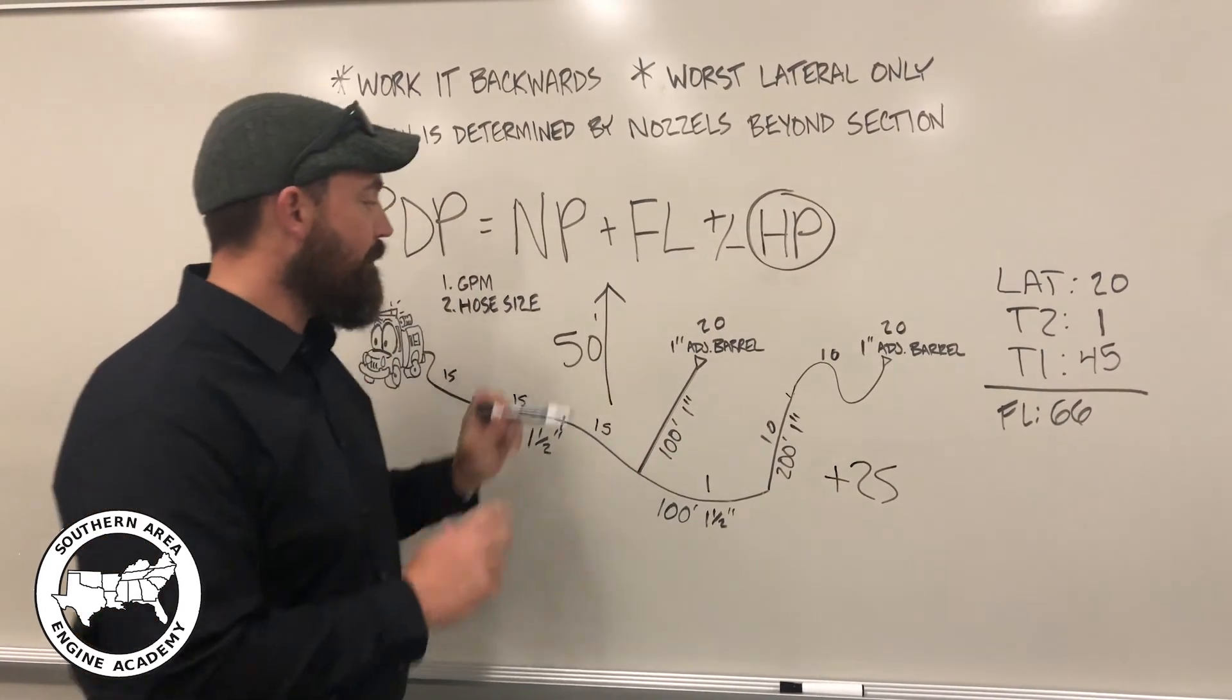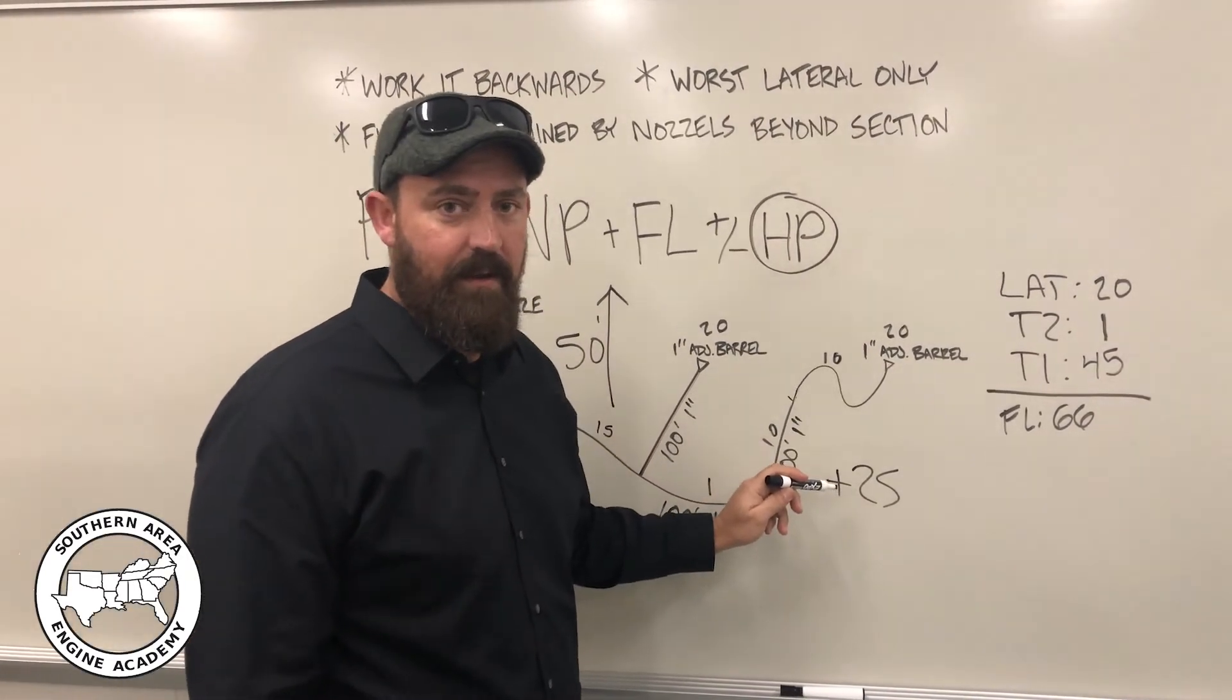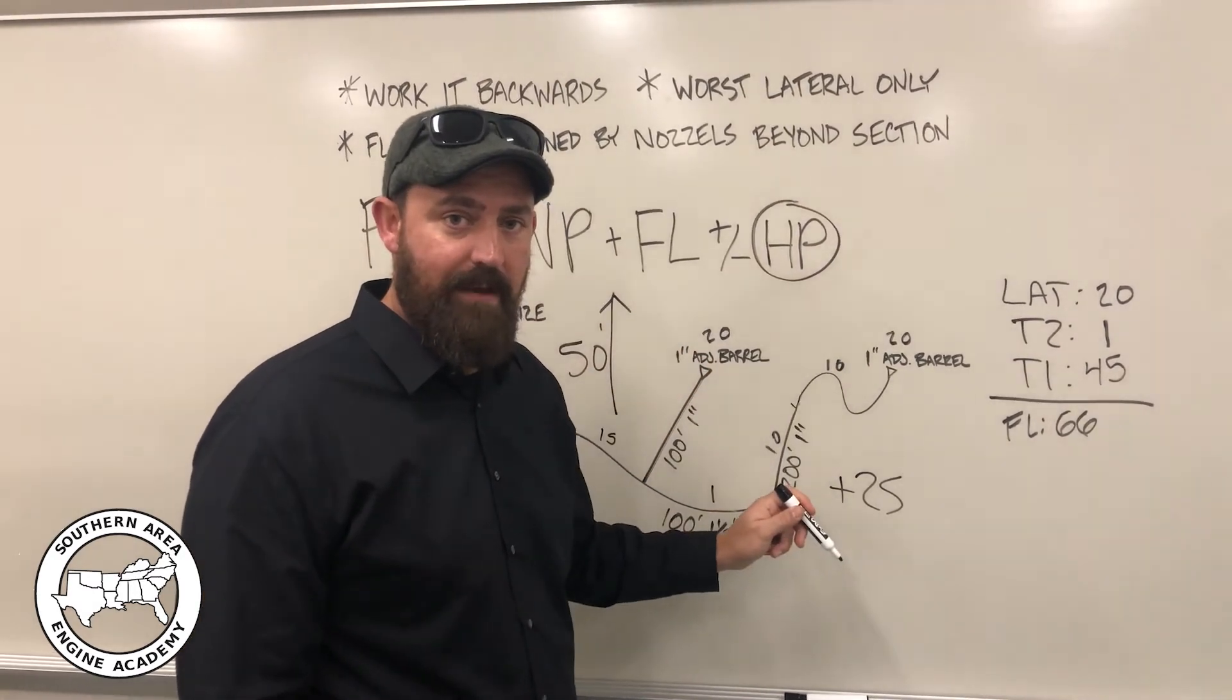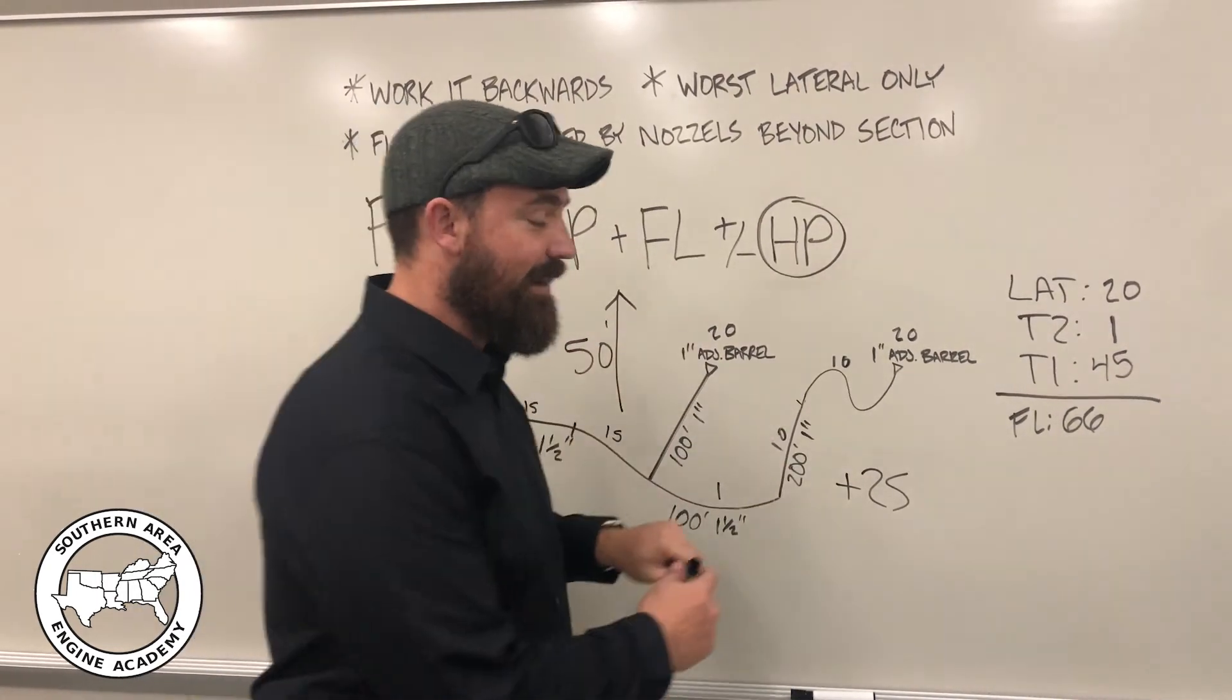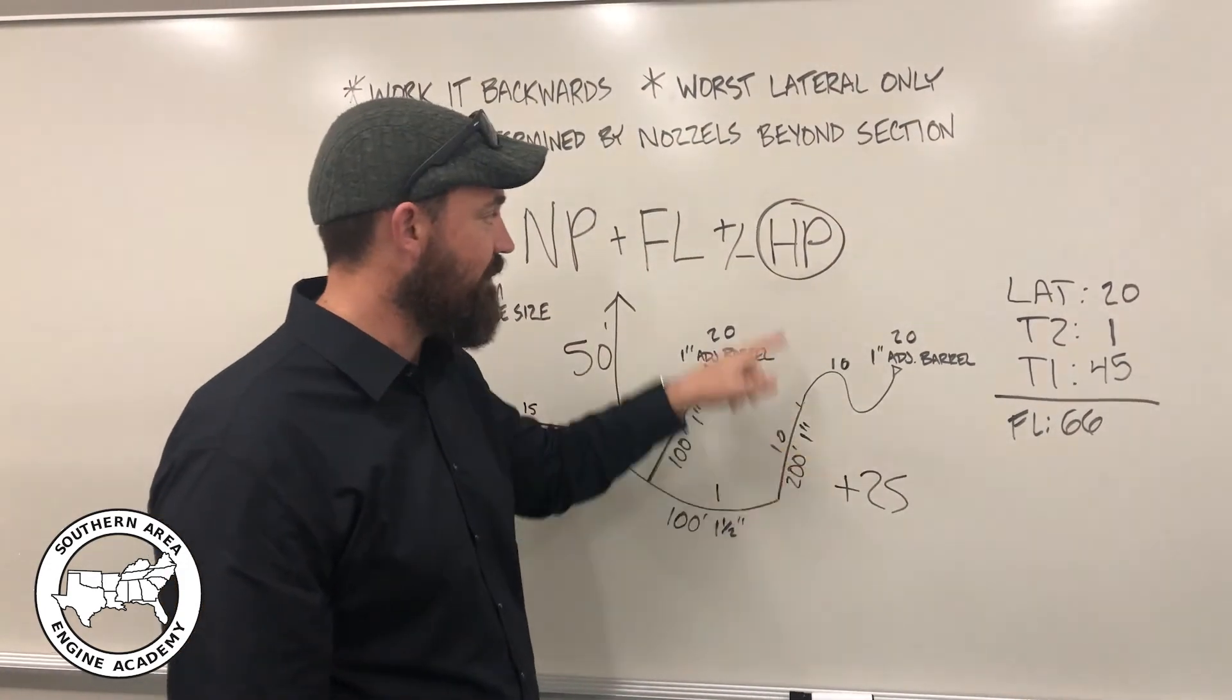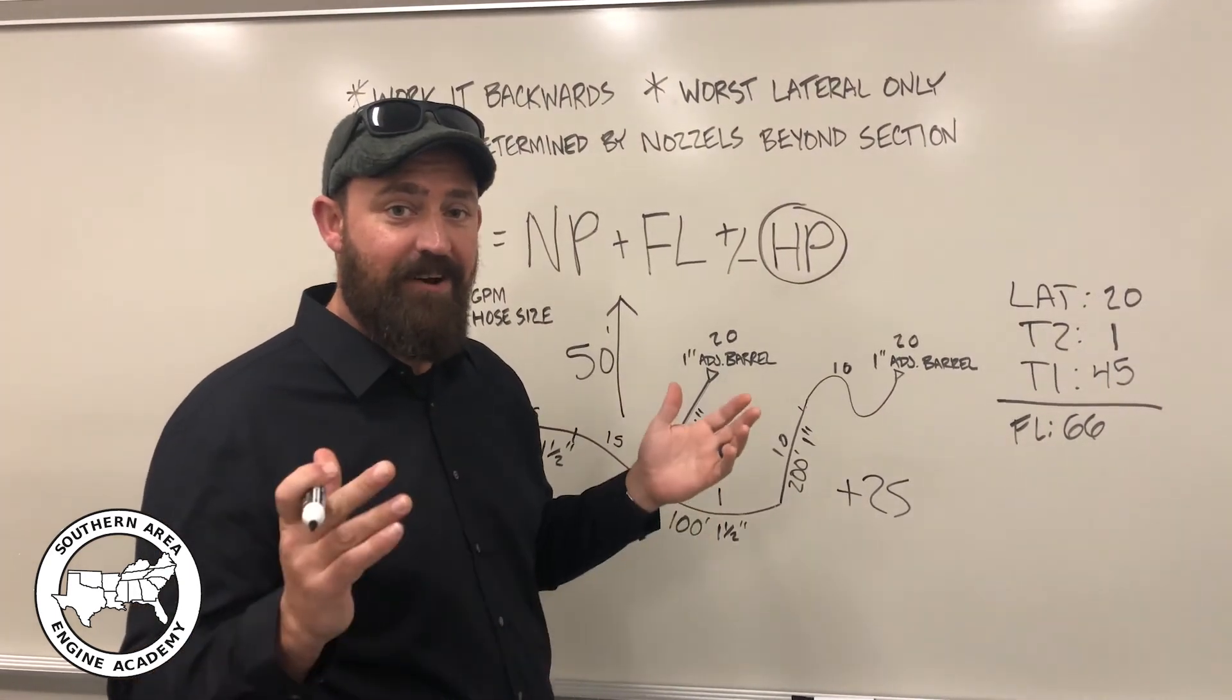Now, if the opposite were true, if this were going 50 feet downhill, we would have to subtract 25 pounds because we'd be picking it up as that water moved its way downhill. So, it's pretty simple, two to one, we'll just remember when it's going downhill to subtract and not add. So, in this case, we need to add 25 pounds. That will be the HP portion of the formula. And now all we have left is putting it all together.